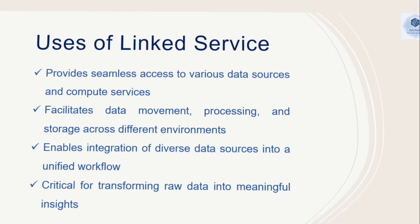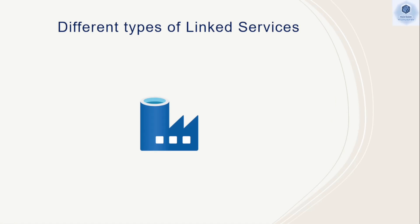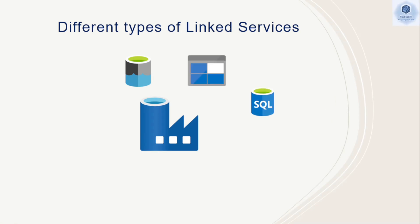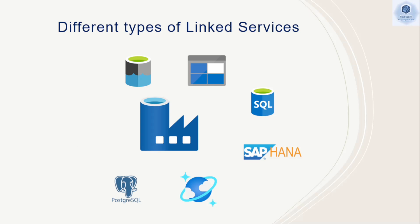We can see some of the linked service types available in Azure Data Factory. We have connectors for Azure Data Lake Gen2, Azure Blob Storage, Azure SQL Database, SAP HANA and other SAP services, Azure Cosmos DB, PostgreSQL, MySQL, Amazon S3, Amazon RDS, and Redshift. We have more than 90 plus connectors available in Azure Data Factory, including REST connections and many others. You can use those linked services to create connections between a number of sources and provision them with any destinations.